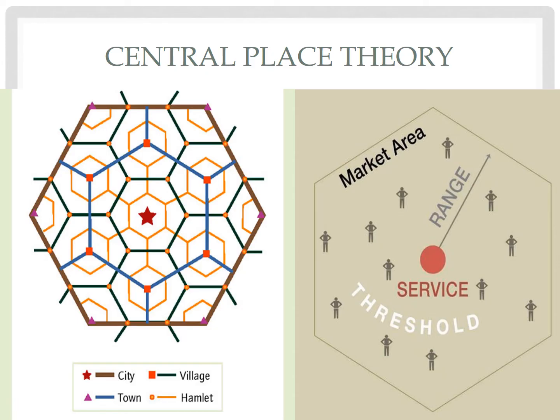Christaller said that the higher order settlement, the city, would be in the center, with towns evenly dispersed around it in a hexagonal pattern. Then surrounding each town would be a series of villages evenly spaced, and around every village would be a series of hamlets, creating a nesting series of hexagons — at least according to Christaller's theory.